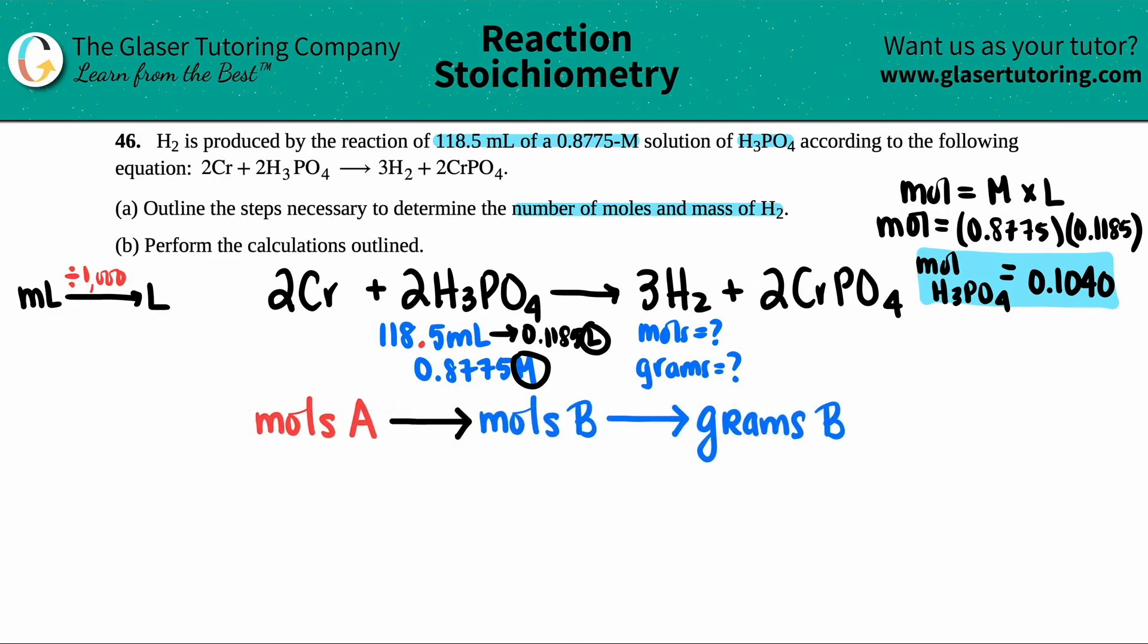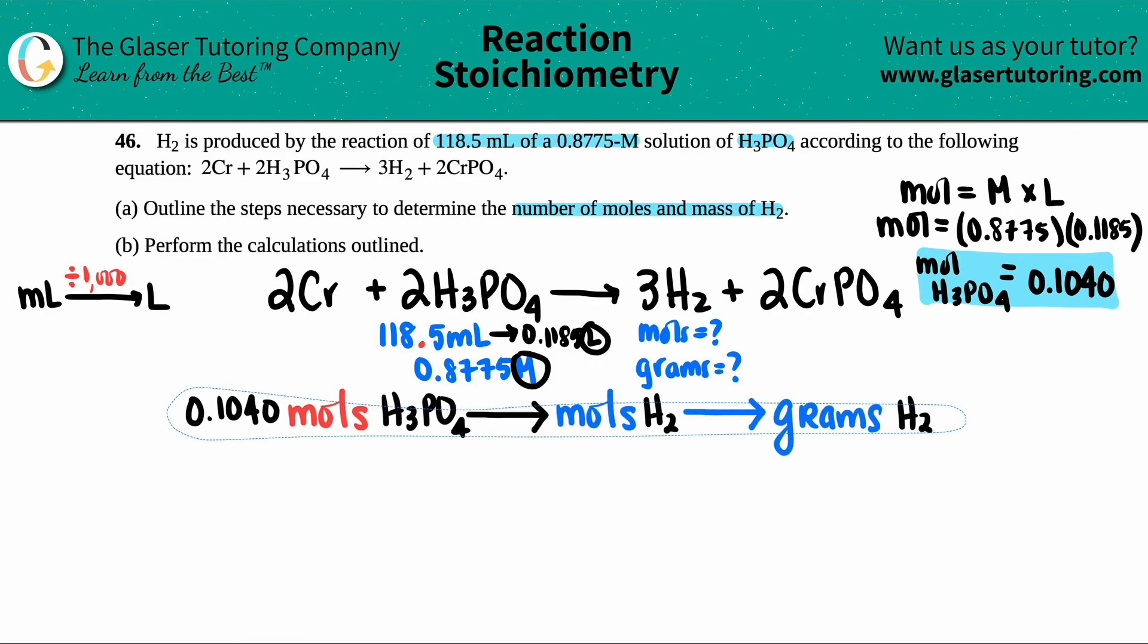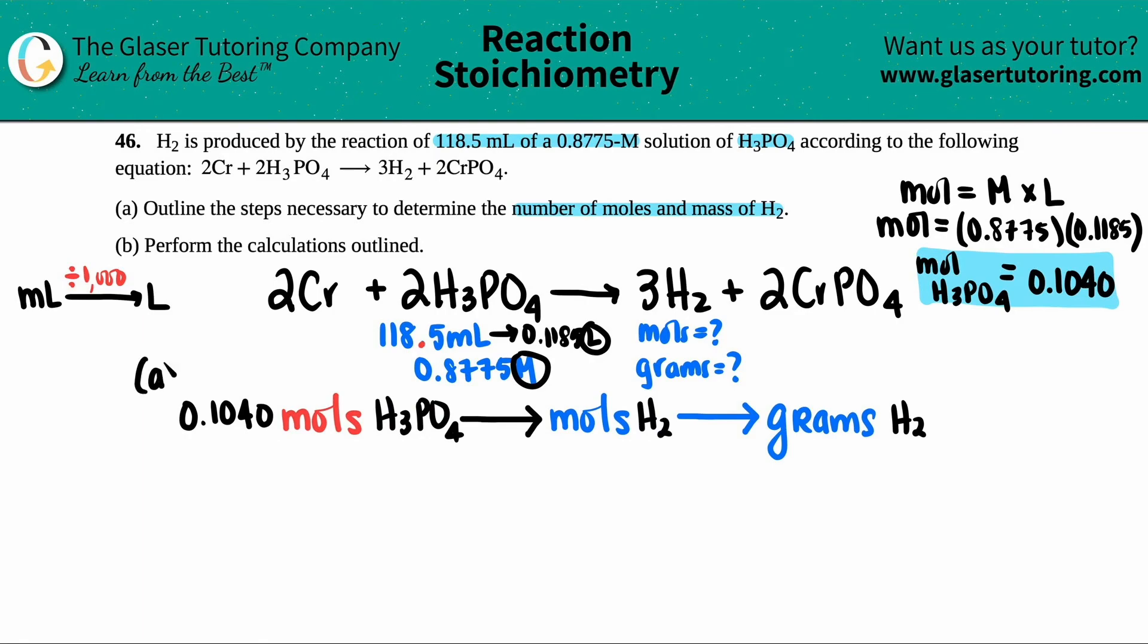Now we're ready to rock and roll. I have 0.1040 moles of H3PO4. And from there, I want to find out the moles and the mass of H2. If you want to label this as letter A, that's fine with me because this is basically the steps necessary. The first thing we had to do is we had to do mole equal molarity times liter. So find the moles of H3PO4 and then here's my little schematic drawing. So now for B, let's just find the calculations.